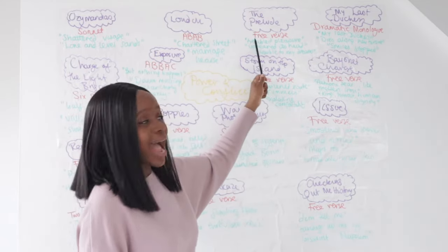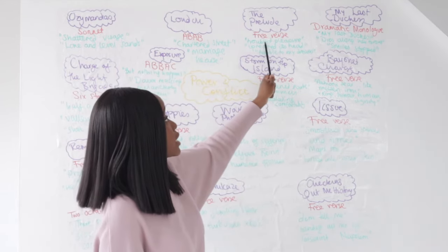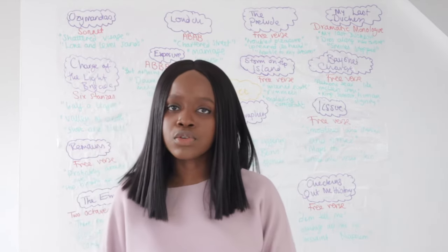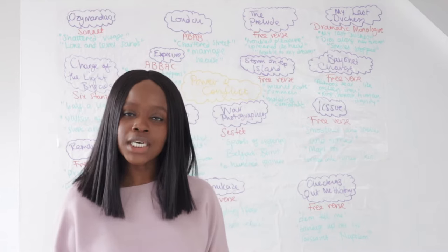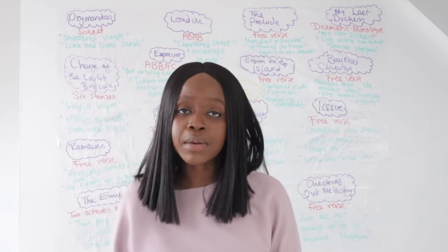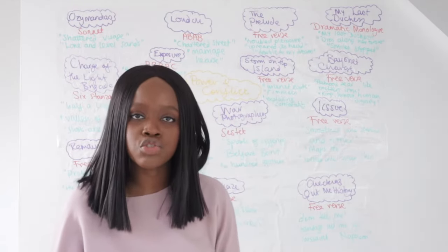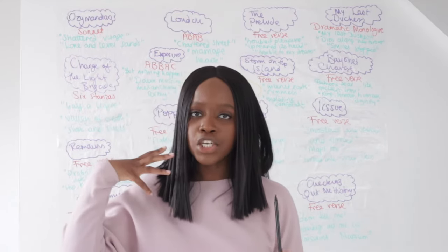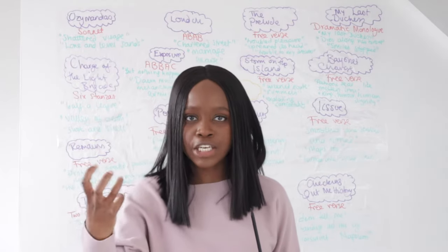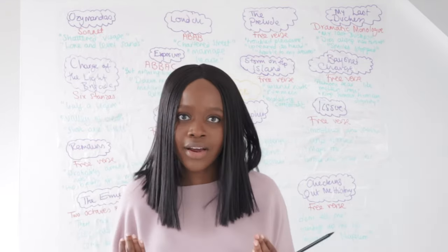The next poem is The Prelude, written in free verse, meaning it doesn't follow a set rhyme scheme. The first quotation is 'troubled pleasure,' an oxymoron showing that the boy who's stolen the boat knows he's not supposed to be doing this — it's a forbidden act. The second quotation is 'upreared its head,' where the mountain is personified as a scary monster. The third is 'trouble to my dreams,' showing that the experience has been a revelation of just how scary and powerful nature is, giving him nightmares.